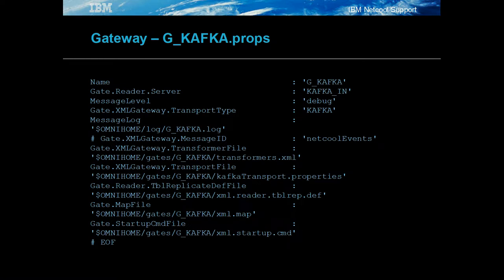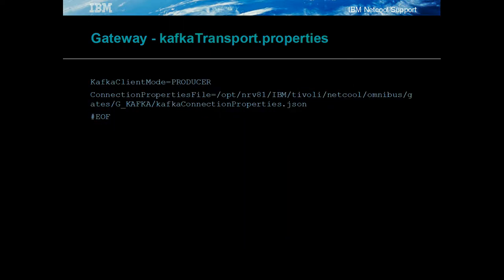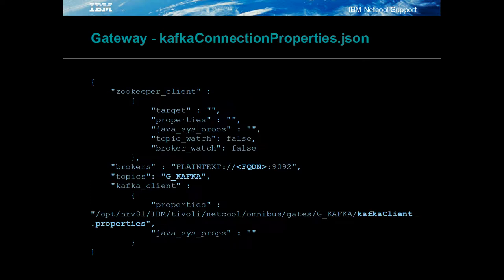The Kafka gateway property file defines the transport type and the object server details, along with the other gateway configuration files. As with the probe, the transport property type is Kafka. The Kafka transport properties file defines the mode and Kafka connection properties file. The Kafka connection properties file defines the Kafka host, port, and topic along with the Kafka client properties file. The gateway writes to the G_Kafka topic.